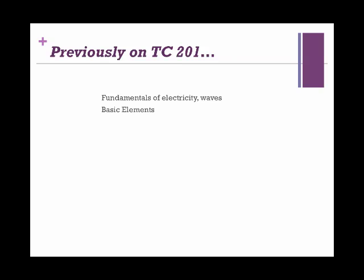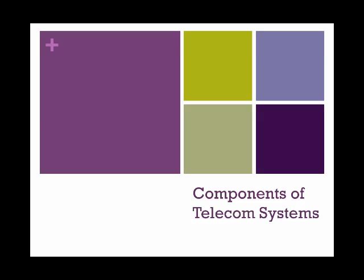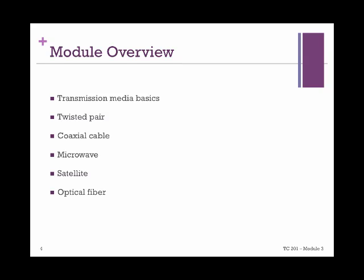Last time we talked about the fundamentals of telecommunication systems and looked at the basic elements of a network. We also talked about waves, signals, and modulation. Today we will talk more on the components of telecommunication systems and we will see transmission media basics, transmission channels starting with wired ones such as copper wires, twisted pairs, coaxial cables, and more modern solutions such as fiber optics. We will also talk about satellites and microwaves.